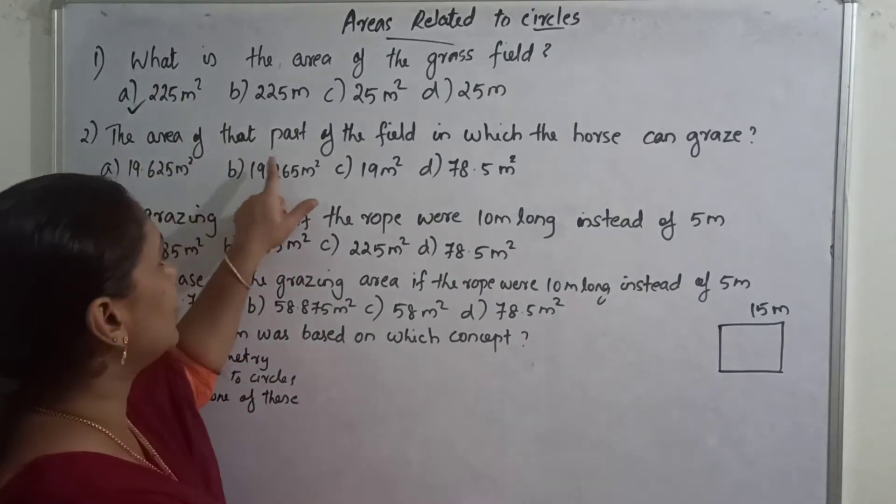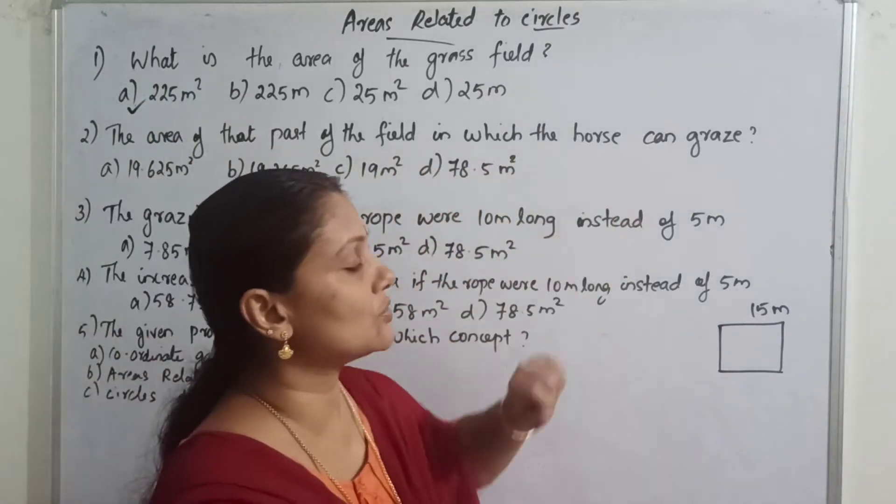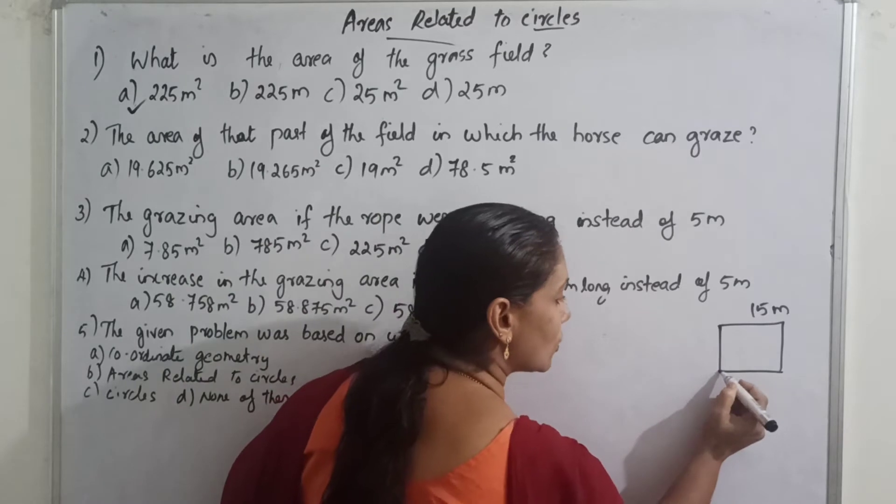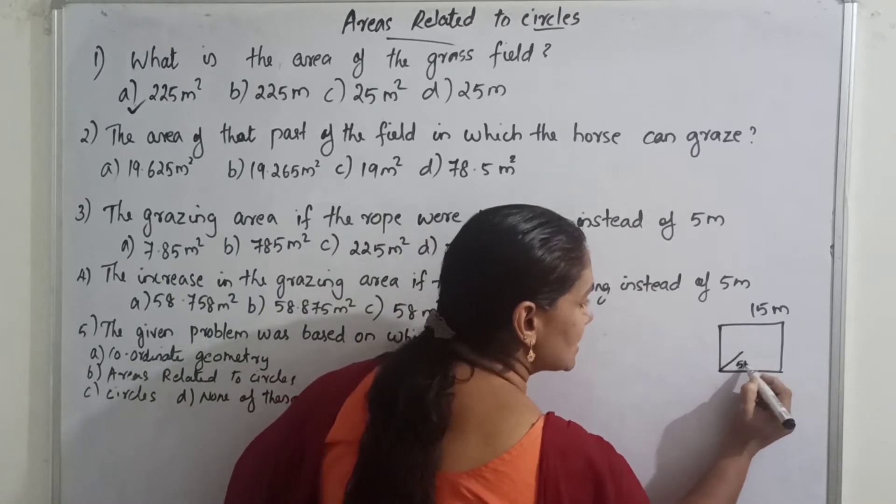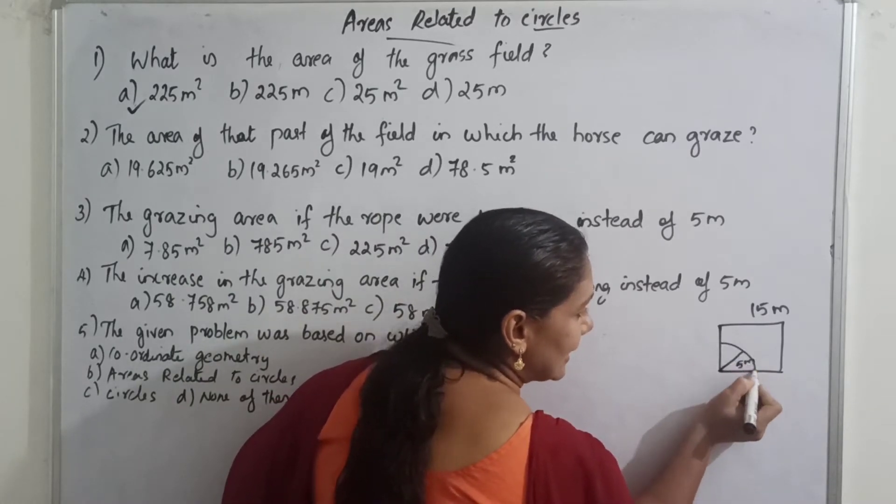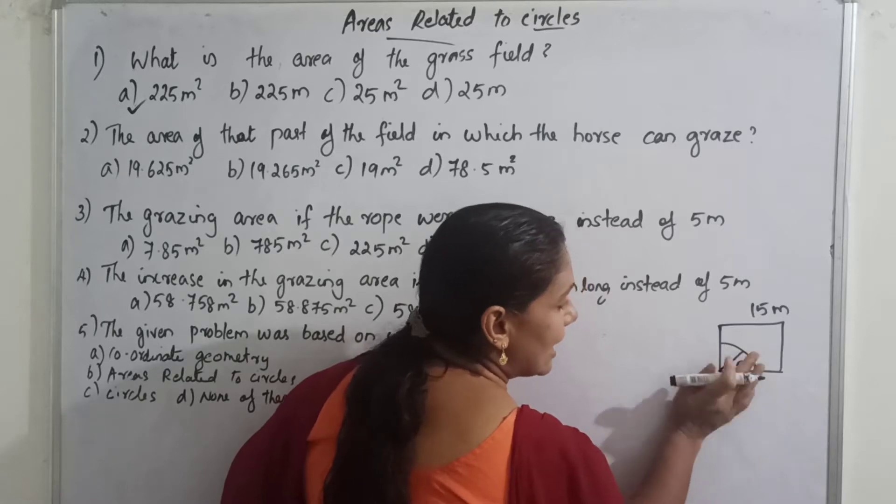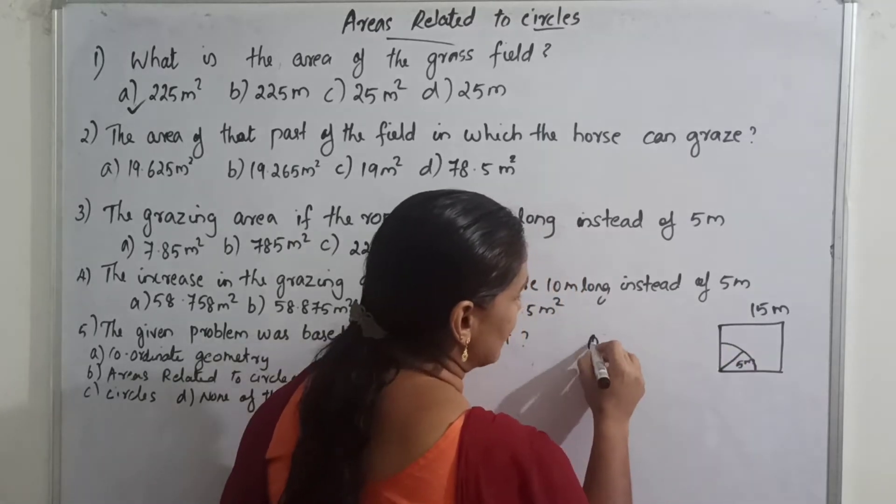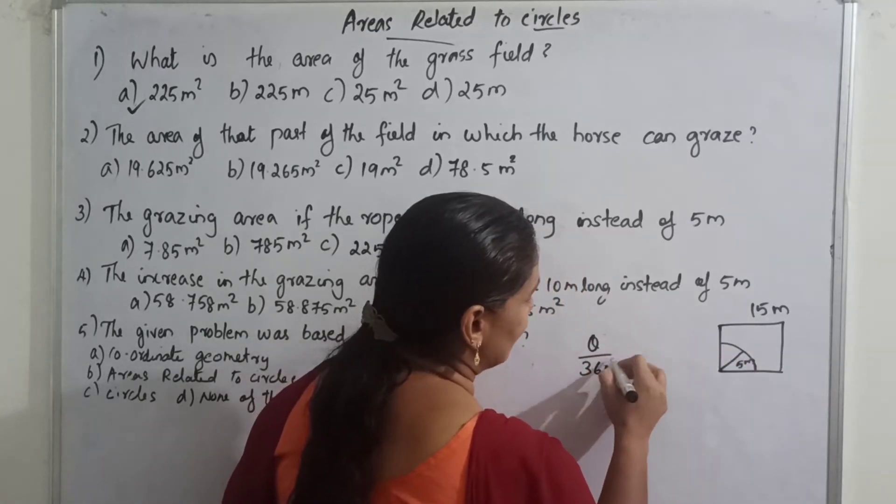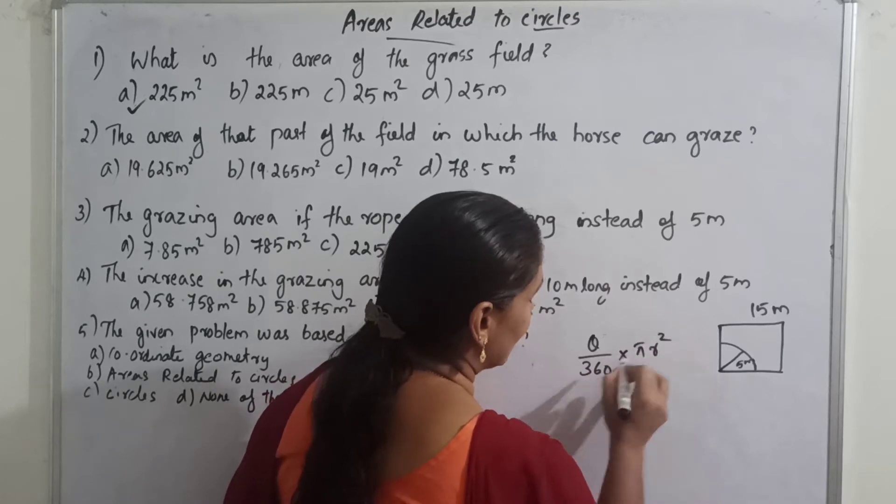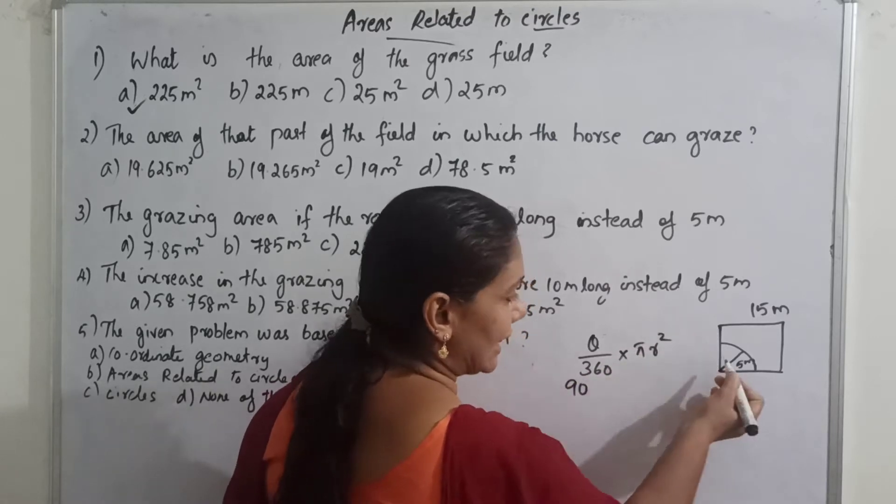The area of that part of the field is the horse. 5m long rope we have a horse. This area is grass area. That area is the area of the sector. Theta by 360 into pi r square. Then theta is 90, corner square field.